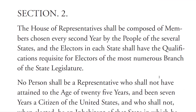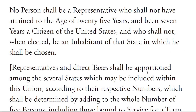Section 2. The House of Representatives shall be composed of members chosen every second year by the people of the several states, and the electors in each state shall have the qualifications requisite for electors of the most numerous branch of the state legislature.